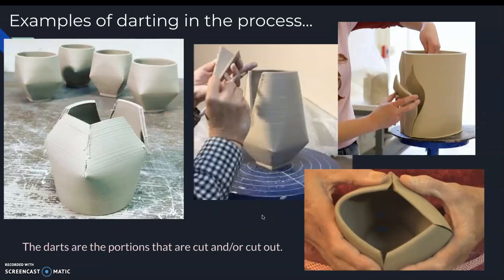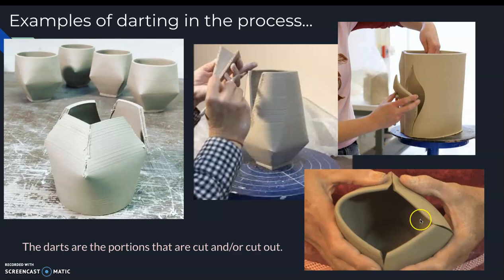Here are some examples of the darting process in ceramics. You can see they had a cylinder and then cut these edges to create these forms, actually using it for the bottom. You can see what's been cut out, and this person is in the middle of darting on this form. Darting can be used in clay that's been built by hand or clay that has been thrown on the pottery wheel.